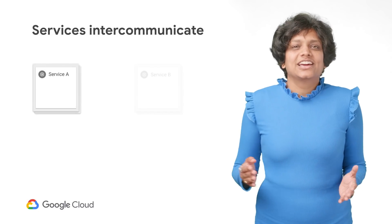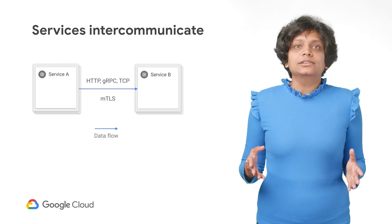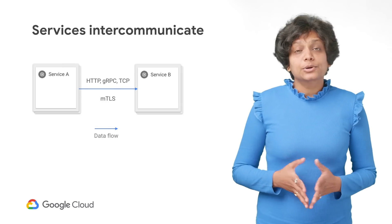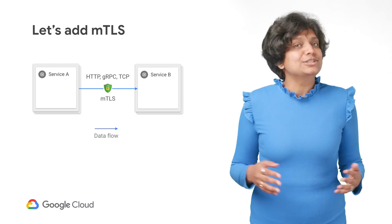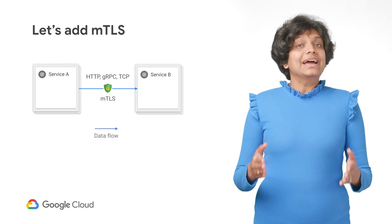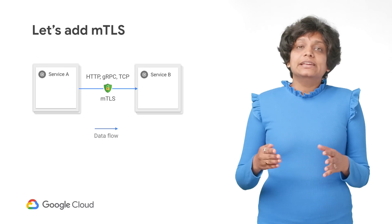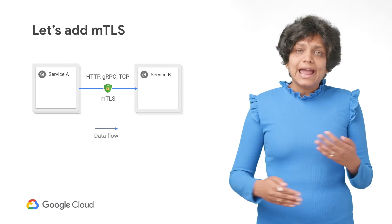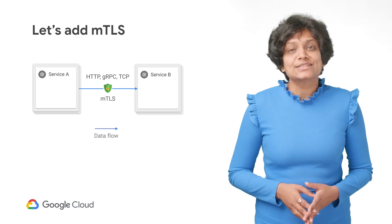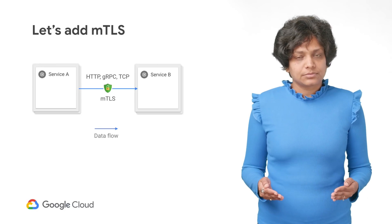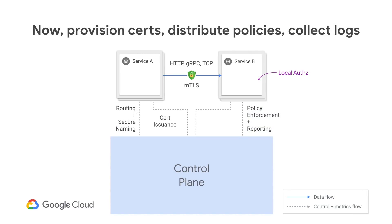What is a Service Mesh? It's a way to build more intelligence into the network. What does that mean? In a monolith, integration between modules was presumed secure. In a microservices architecture, the integration between services and requests traverse a network. Therefore, we need mutual TLS to secure those requests. But mutual TLS needs to be managed, and we need each service to be able to discover the other services that it might be calling.